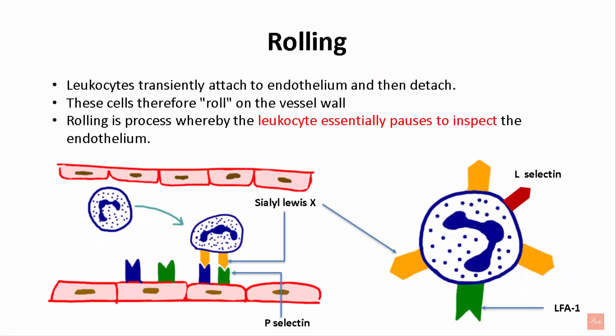Coming to rolling: leukocytes transiently attach to the endothelium and then detach. This regular attachment and detachment causes rolling of the neutrophils or leukocytes onto the vessel wall — it's a process by which the leukocyte essentially pauses and inspects the endothelium. There are certain molecules present on the surface of the neutrophils: L-selectins, sialyl-Lewis-X modified glycoprotein, and leukocyte function-associated antigens.